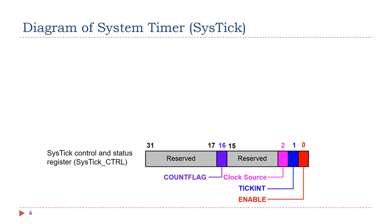Let's first take a look at the SysTick control and status register. In this register, only 4 bits are used, including 1 status bit and 3 control bits. The status bit is the count flag bit. The 3 control bits include the clock source selection bit, the tick interrupt enable bit, and the timer enable bit.